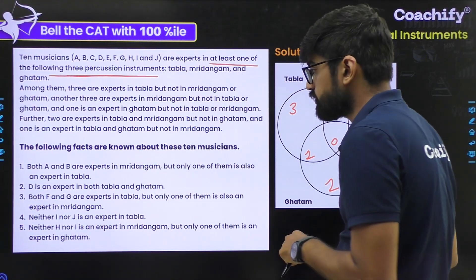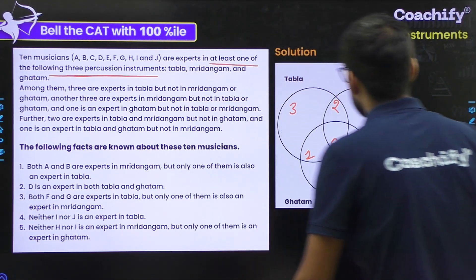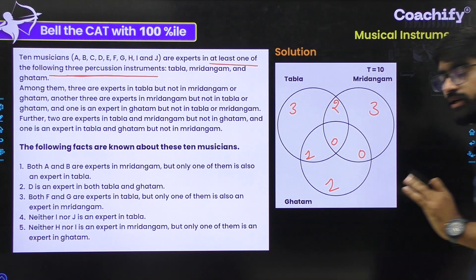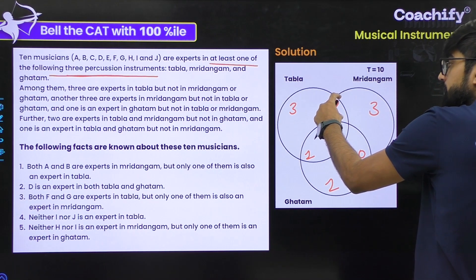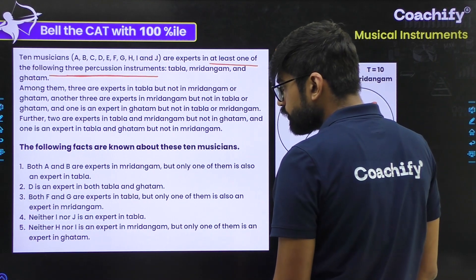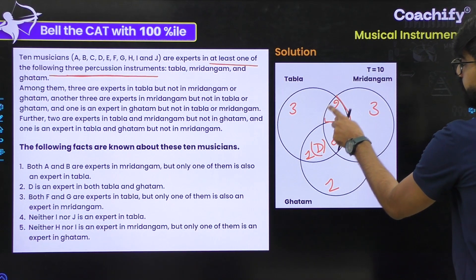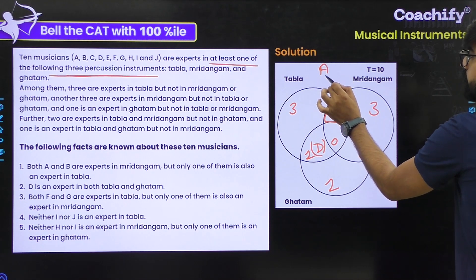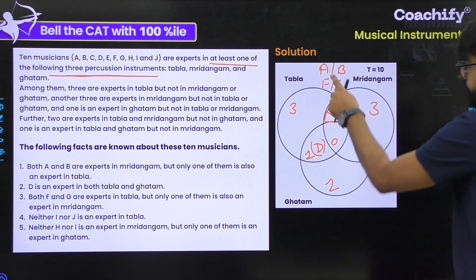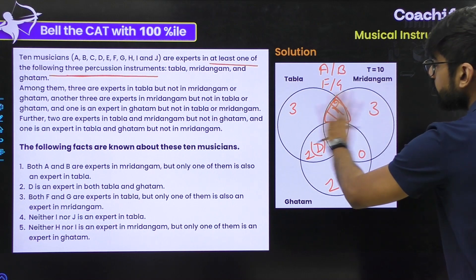The following facts are known about these ten musicians. Both A and B are experts in mridangam, but only one of them is also an expert in tabla — meaning exactly one of A or B will be in the tabla-mridangam intersection. D is an expert in both tabla and ghatam, so D goes in the tabla-ghatam intersection. Both F and G are experts in tabla, but only one of them is also an expert in mridangam. So exactly one of F or G is in the tabla-mridangam intersection, giving us four possible combinations: A with F, A with G, B with F, or B with G.